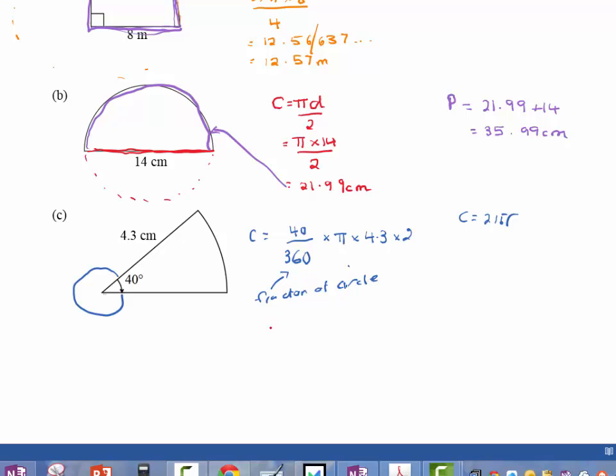So, we can put that into our calculators, and our calculator is going to give us 3.001966, something along those lines. So to two decimal places that's 3.00 centimeters.